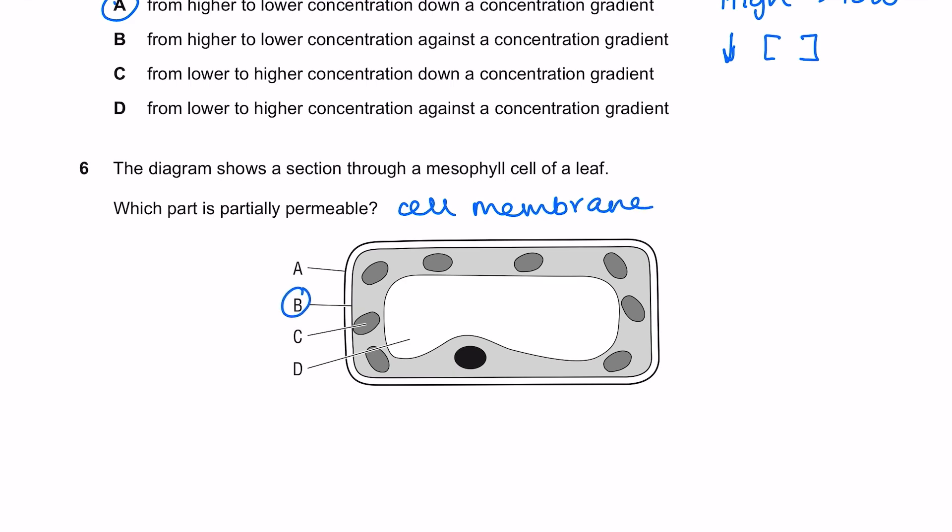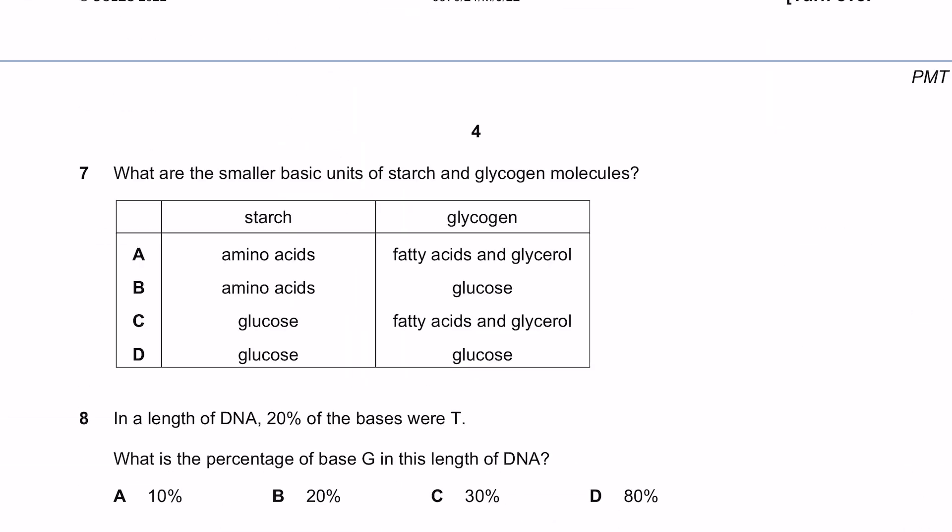What are the smaller basic units of starch and glycogen molecules? Starch gets broken down into glucose by amylase. Glycogen breaks down into glucose. Remember glycogen is made through the action of insulin, so we want glucose. The answer here is D.